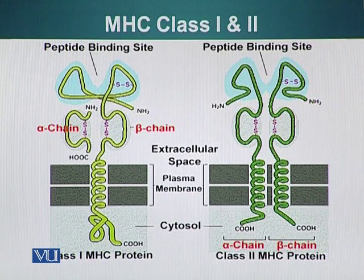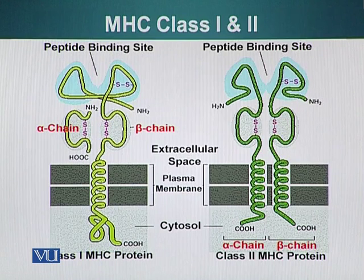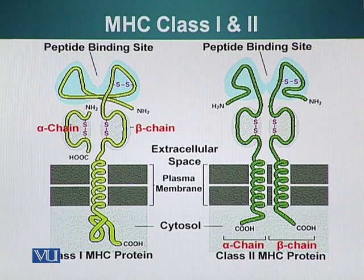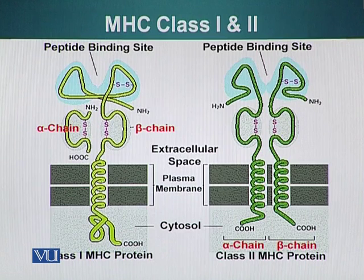The structure of MHC Class I and II molecules is similar. They are heterodimers made up of two different polypeptide chains. Except for the alpha chain of Class I proteins, all MHC proteins have an extracellular domain, an intracellular domain, and a transmembrane domain embedded in the plasma membrane. The alpha chain of Class I MHC proteins is a small peptide present only in the extracellular region, and the N-terminus of these proteins is also present in the extracellular space.